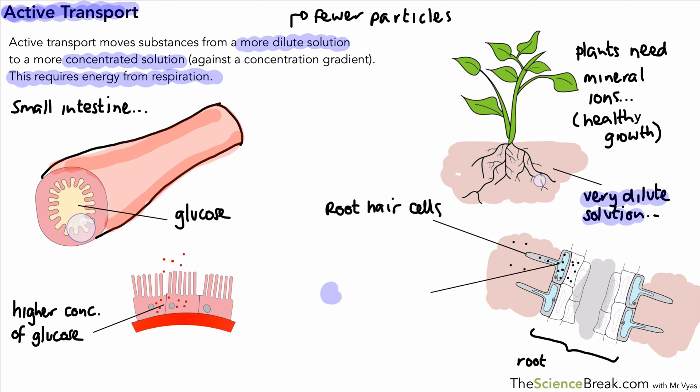So that's a second example of where active transport might be used from a very dilute solution in the soil to a more concentrated solution in the cells where the mineral ions are present in larger amounts for a given volume. Okay, so two very important examples of active transport. Please remember we're going against the concentration gradient and we require energy from respiration for this to happen.